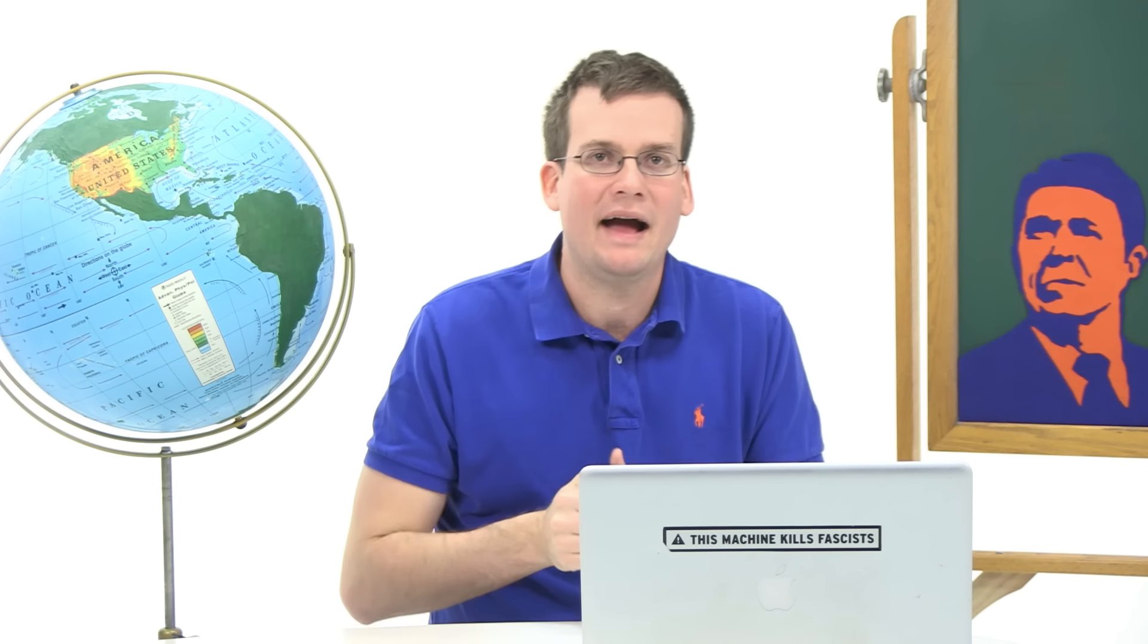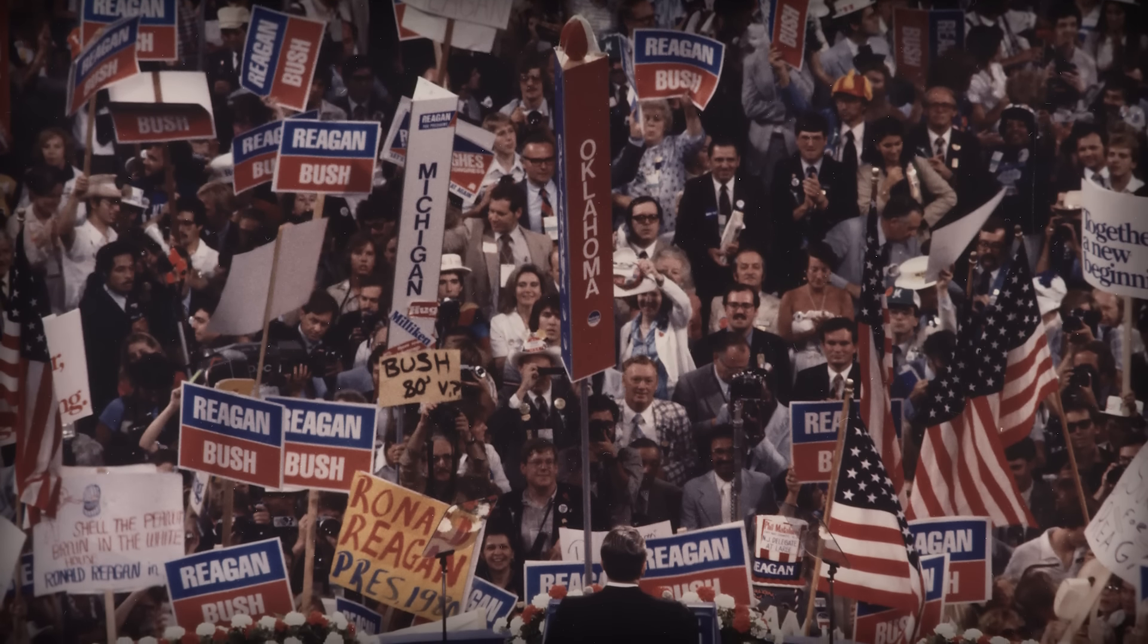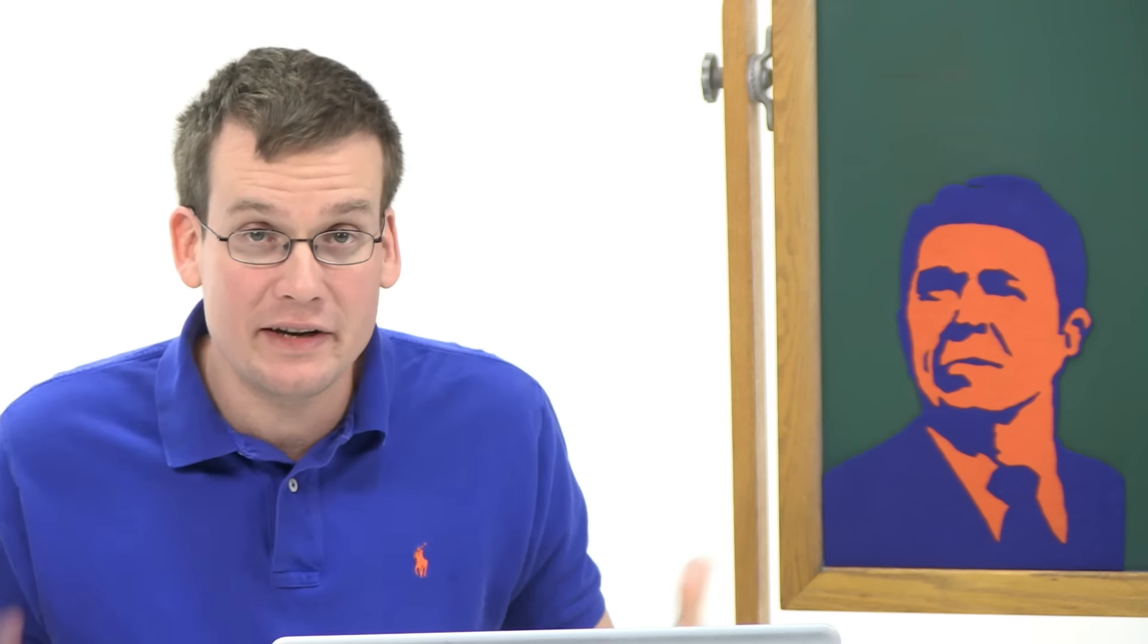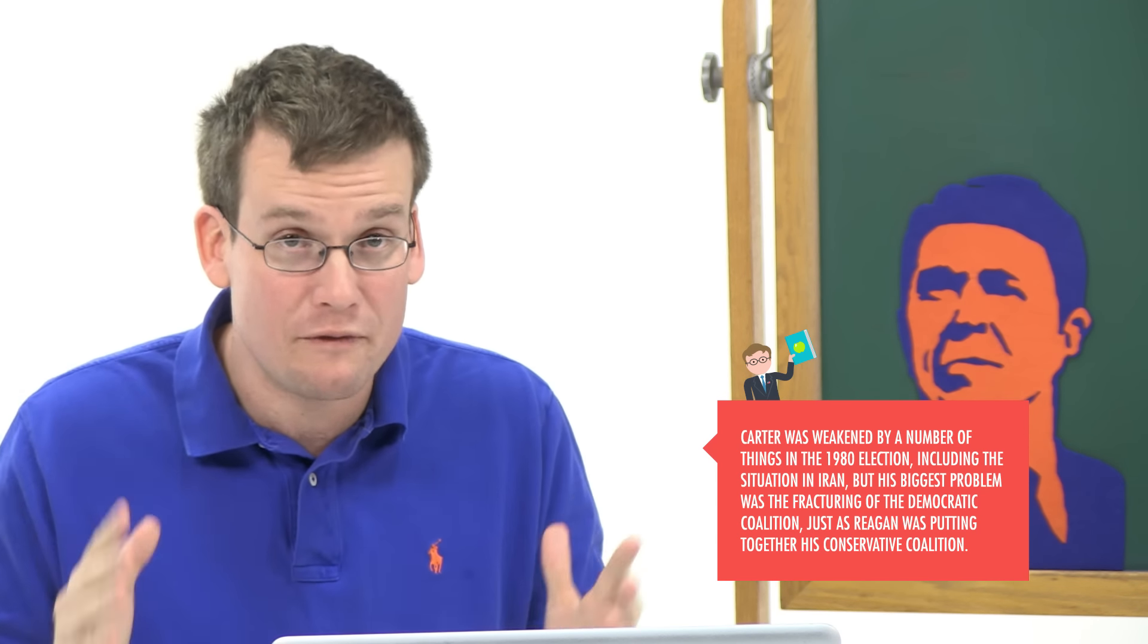Now, Reagan also appealed to the so-called white backlash, working-class white people who resented the advances that African Americans had made during the 1960s and 1970s. And economic conservatives liked his anti-union, low-taxes, free-market positions, and anti-government crusaders and libertarians liked his assertion that government was not the solution to problems, but was itself the problem. Then there were the Cold War hawks, who liked his militant anti-Soviet rhetoric and his desire to spend more on the military. Now, that's a big coalition, but it turned out to be just barely a majority coalition.